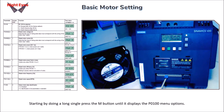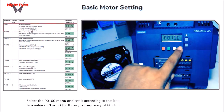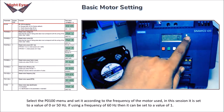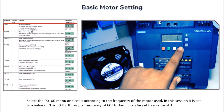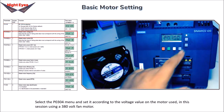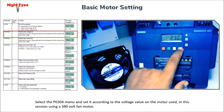Start by doing a long single press of the M button until it displays the P0100 menu. Select P0100 and set it according to the motor frequency — in this session it is set to 0 for 50Hz. If using 60Hz, set it to 1. Then select P0304 and set it according to the motor voltage — in this session using a 380V fan motor.